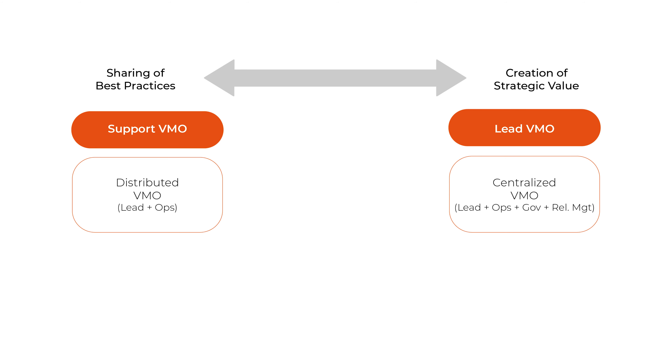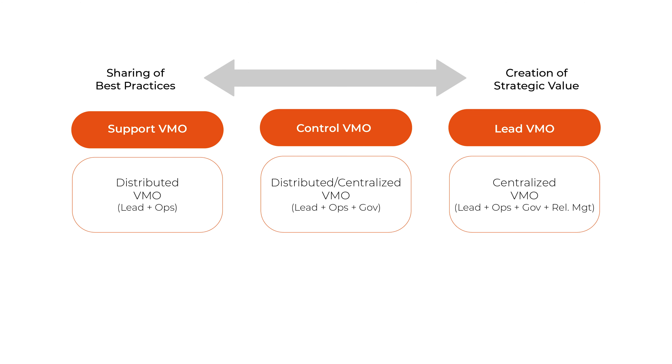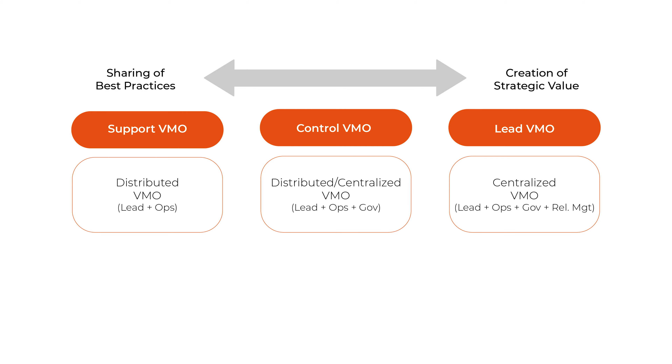In between, we have something we call a controlling vendor management office, which would typically have responsibility for the contract management side but leave the relationship management responsibilities with the contract owner. This is quite an important question to ask yourself, because it will determine what type of personnel you want to have in that vendor management office.